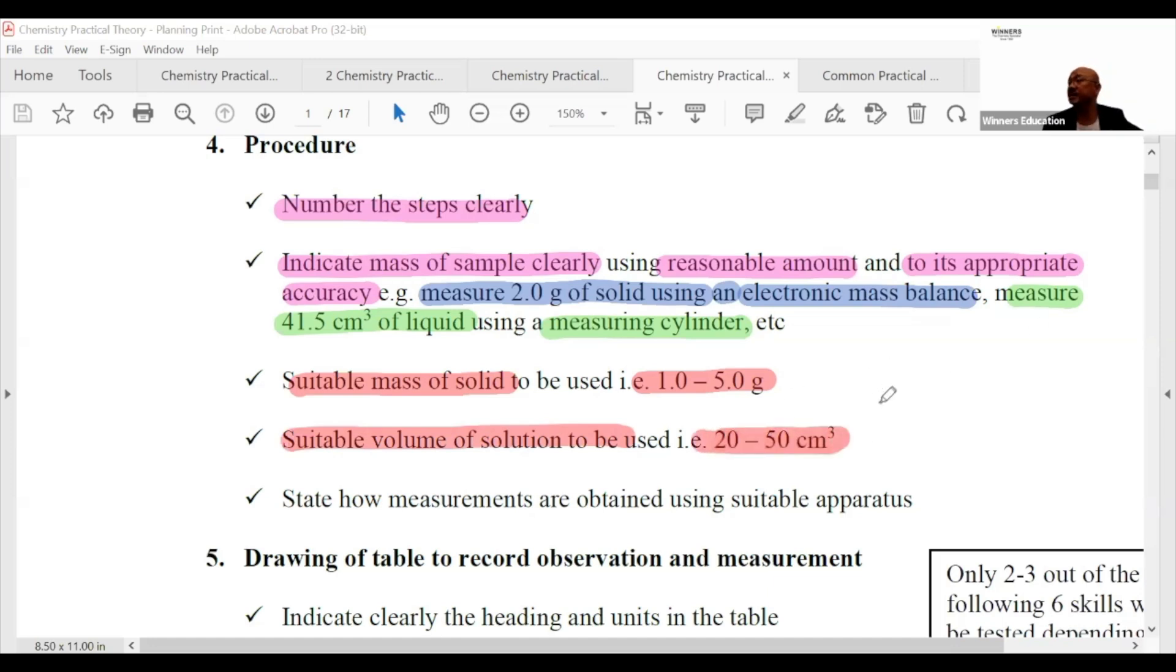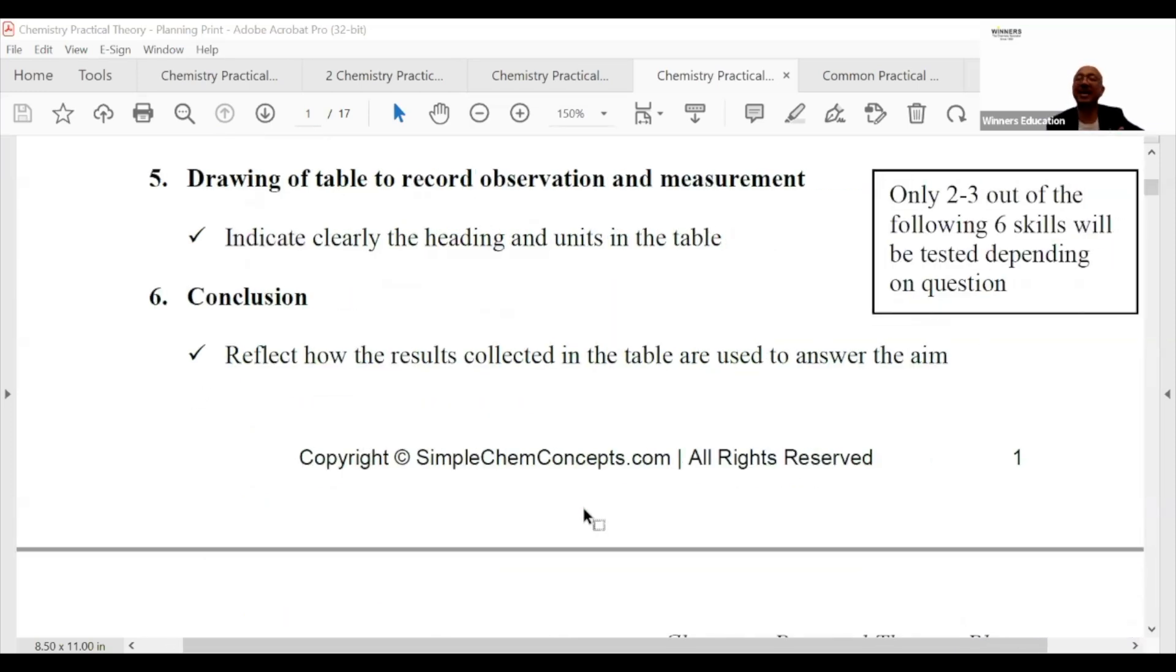State how measurements are obtained using suitable apparatus. These are general guidelines. Drawing of table to record observation and measurement - just like how you do your experimental question. Indicate clearly the heading and units in the table. Conclusion: reflect how the results collected in the table are used to answer the aim.